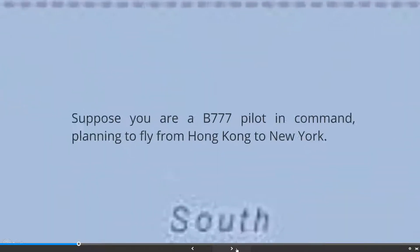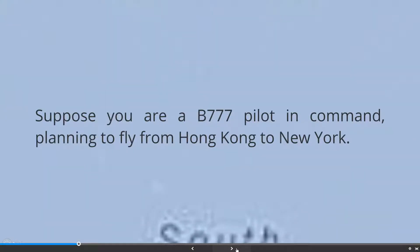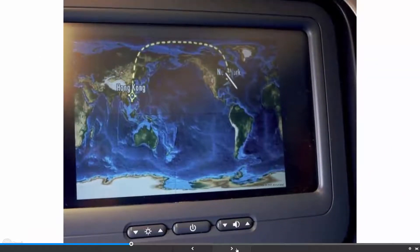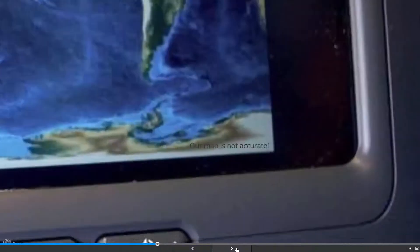Suppose you are a B777 pilot in command, planning to fly from Hong Kong to New York. Are you going to fly in a straight line over the Pacific Ocean? In fact, we will fly over the polar region. Why is this? The reason is our map is not accurate.